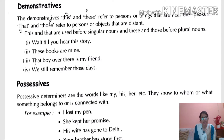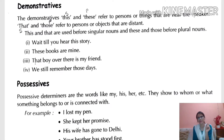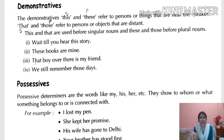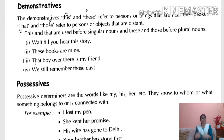I have written SP here — S means singular, P means plural. 'This' and 'that' are for singular nouns; 'these' and 'those' are for plural nouns. For example: 'Wait till you hear this story' — 'this story' is nearby and singular. 'These books are mine' — 'these' is used because books are plural.